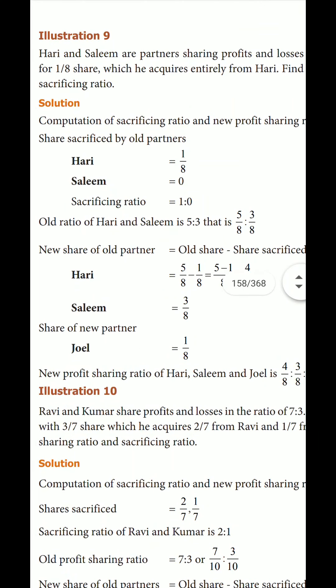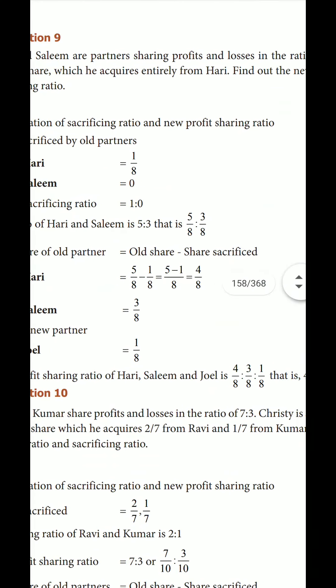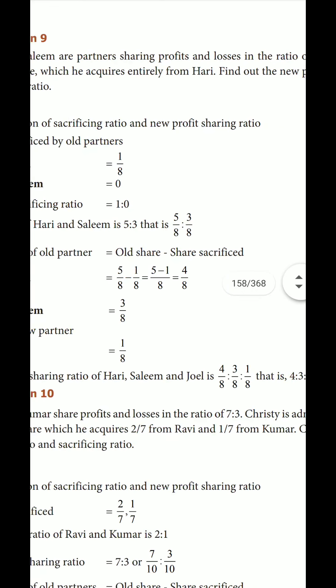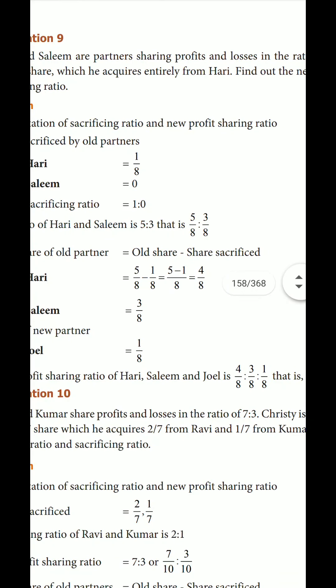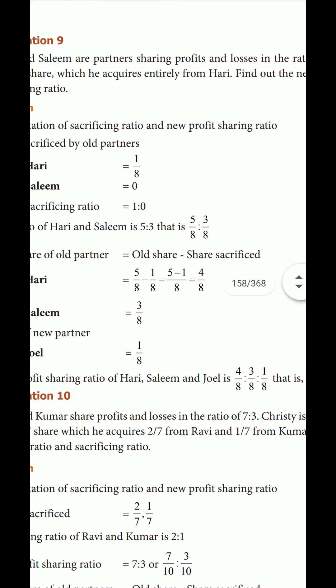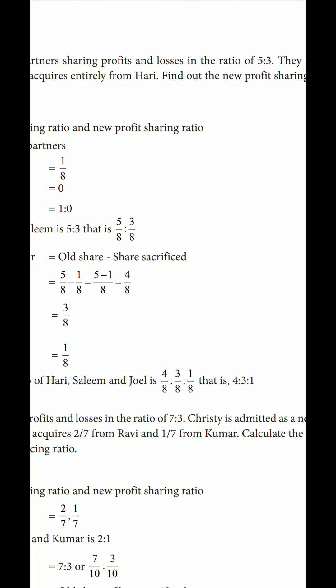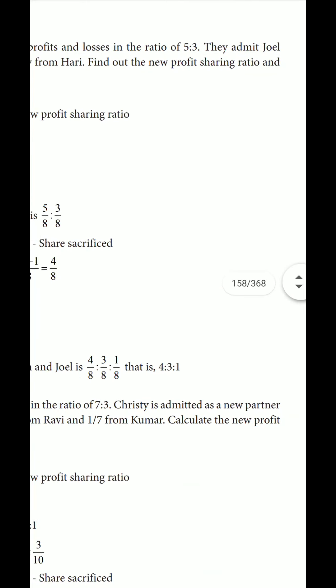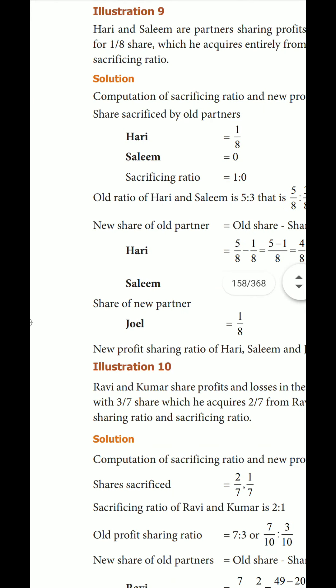Problem: Hari and Salim are partners sharing profits and losses in the ratio of 5 to 3. They admitted Joel for a 1/8 share.